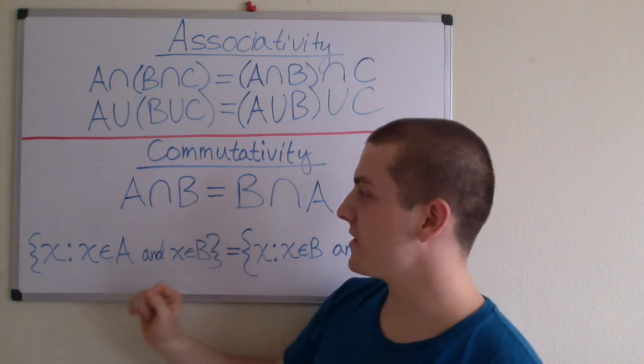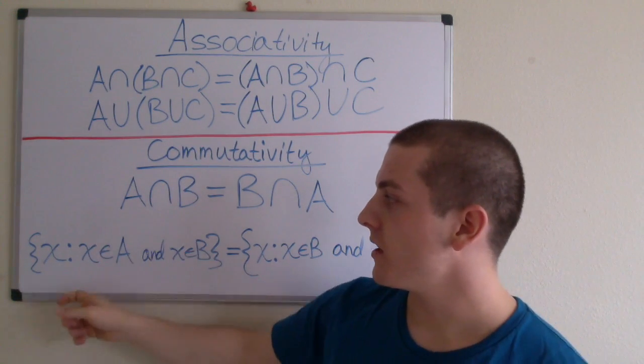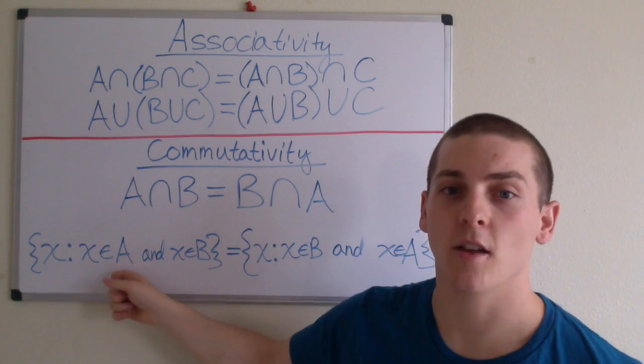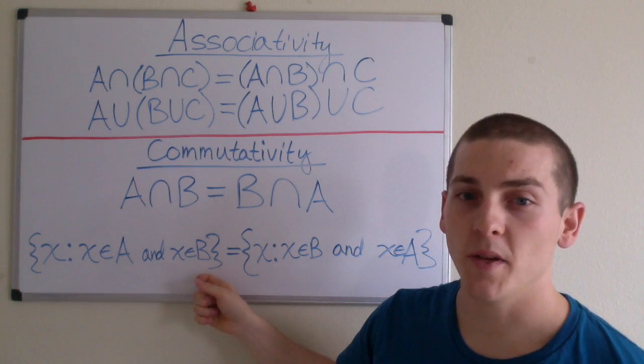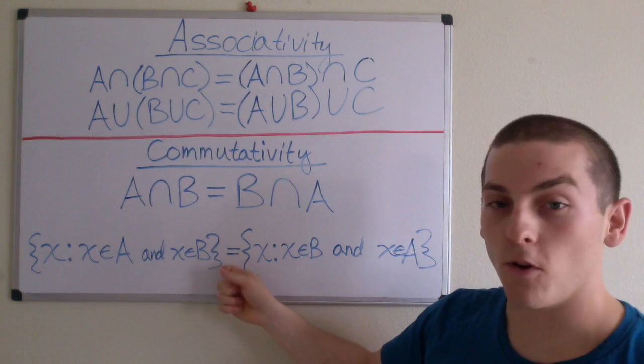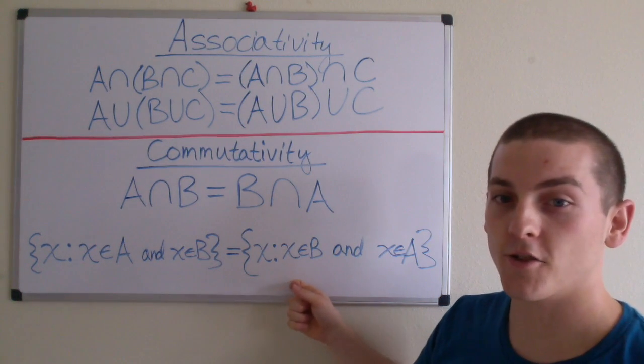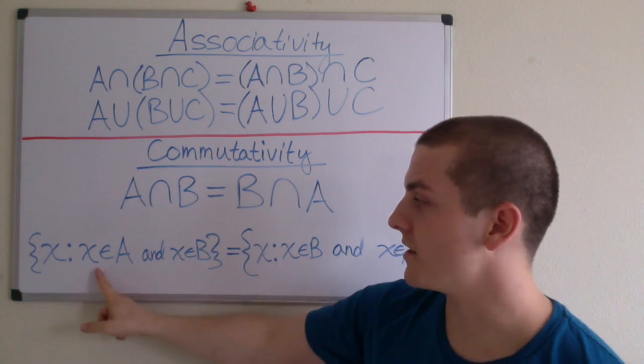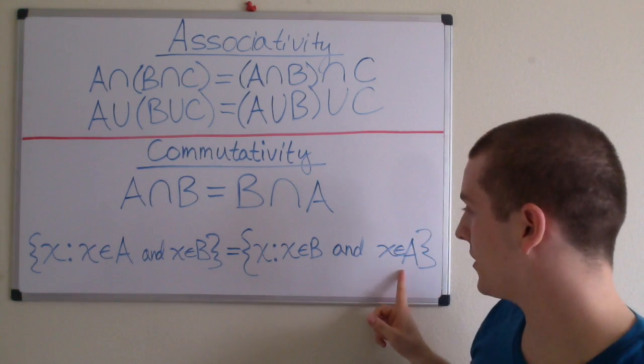So if we look at the actual definition, we have A intersection B is defined as the set containing elements X such that X is an element of A and X is an element of B. And that's going to equal the set containing elements X such that X is an element of B and X is an element of A.